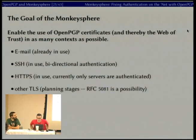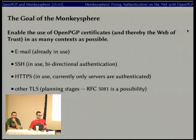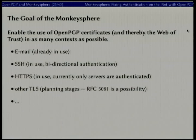Our goal with Monkeysphere is to enable the use of OpenPGP in as many domains as possible. Email is already in use. SSH has a working implementation of bi-directional authentication — both the host authenticating to the user and the user authenticating to the server via OpenPGP key. We have HTTPS working for server-to-user authentication. Other TLS applications are in planning stages.